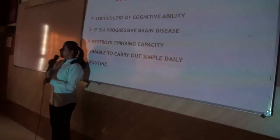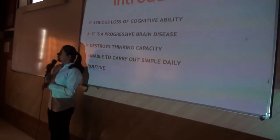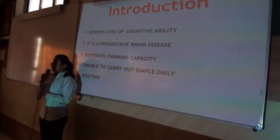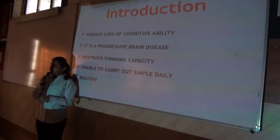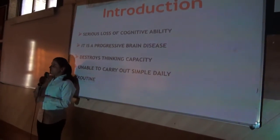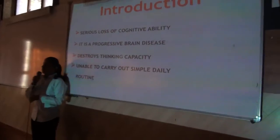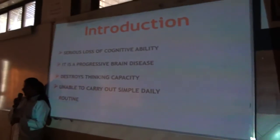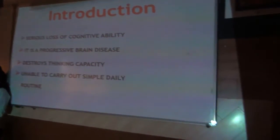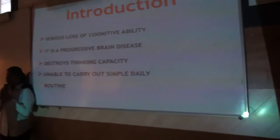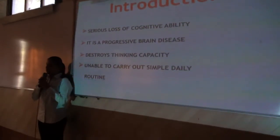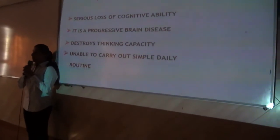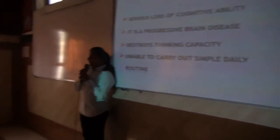Alzheimer's disease is the most common form of dementia. Then, what is dementia? Dementia is a serious loss of cognitive ability — that is, the ability of the brain to think, to carry out some tasks, to memorize something, etc.